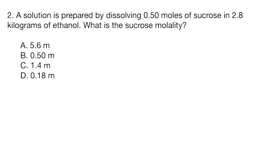Question two, a solution is prepared by dissolving 0.5 moles of sucrose in 2.8 kilograms of ethanol. What is the sucrose molality? A, 5.6 mole, B, 0.5 mole, C, 1.4 mole, D, 0.18 mole.